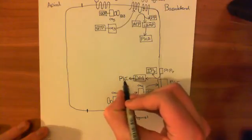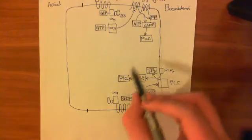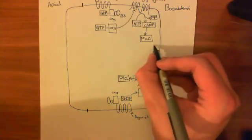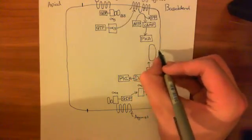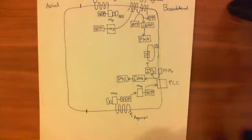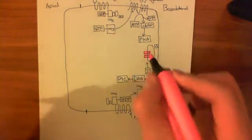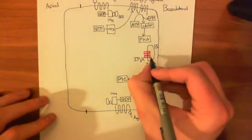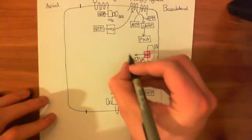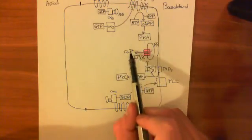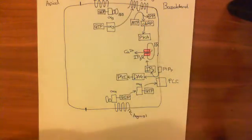Diacylglycerol activates protein kinase C, which is also a really important molecule for activating salt secretion. So we've got two protein kinases now activated: protein kinase A and protein kinase C. IP3 goes off to the endoplasmic reticulum where calcium is sequestered, and there is an IP3 receptor on the endoplasmic reticulum. IP3 activates the IP3 receptor, which opens and allows calcium to leave the endoplasmic reticulum and go into the cytoplasm. So overall we have protein kinase A activated, calcium raised intracellularly, and protein kinase C activated.